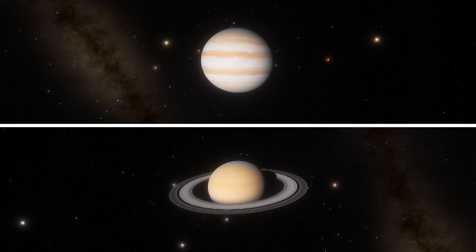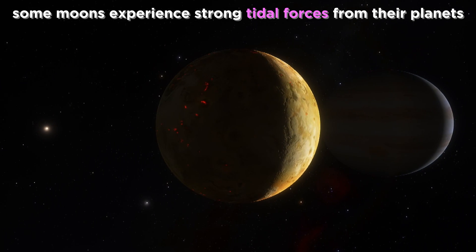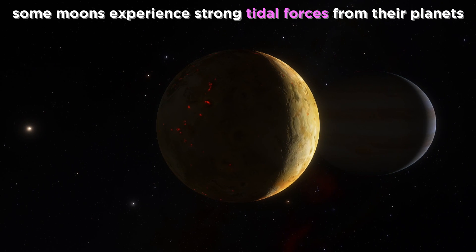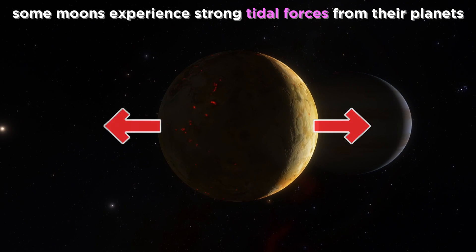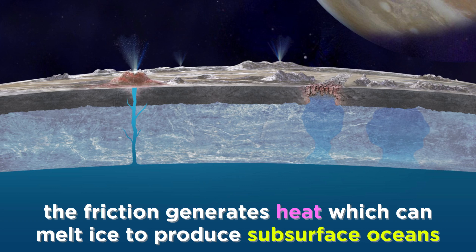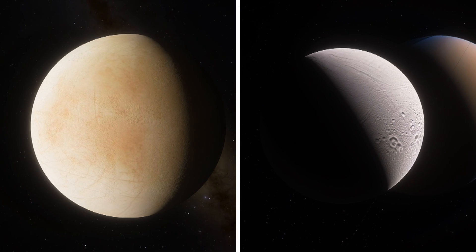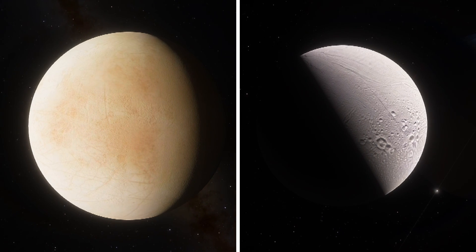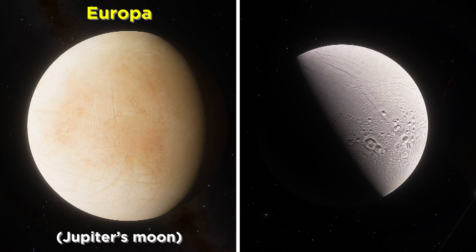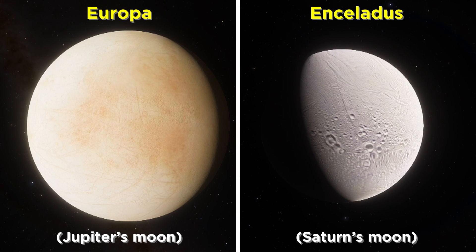Remember when we talked about the Jovian and Saturnian systems? We saw that many of the moons of Jupiter and Saturn orbit their planet closely enough that the considerable tidal forces distort them such that there is a lot of friction inside these moons. That generates a lot of heat, enough heat to melt ice and get liquid water. We know with reasonable certainty that a number of these worlds contain oceans of liquid water, most notably Europa and Enceladus, and so it seems that solar radiation is not the only way to get an ocean.